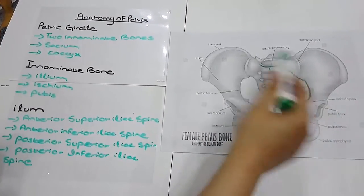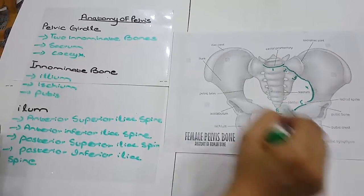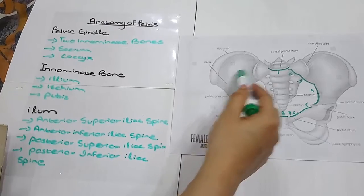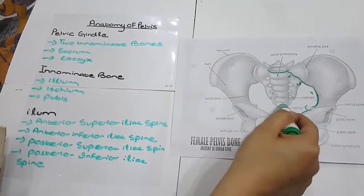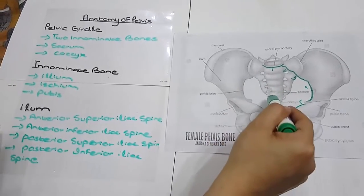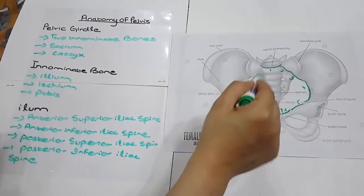First of all, we will discuss the pelvic girdle. The pelvic girdle comprises of two innominate bones. Here you can see two innominate bones, sacrum and coccyx. It contains and protects the bladder, rectum and internal reproductive organs.